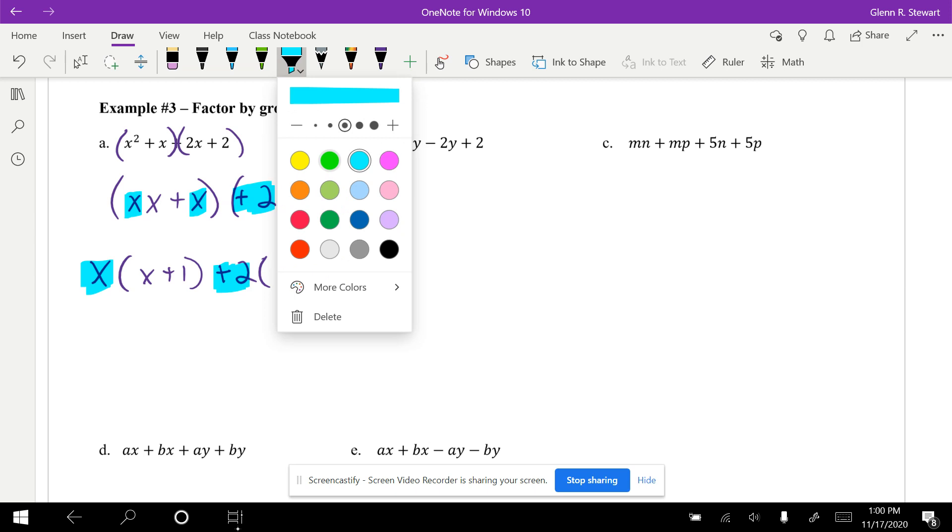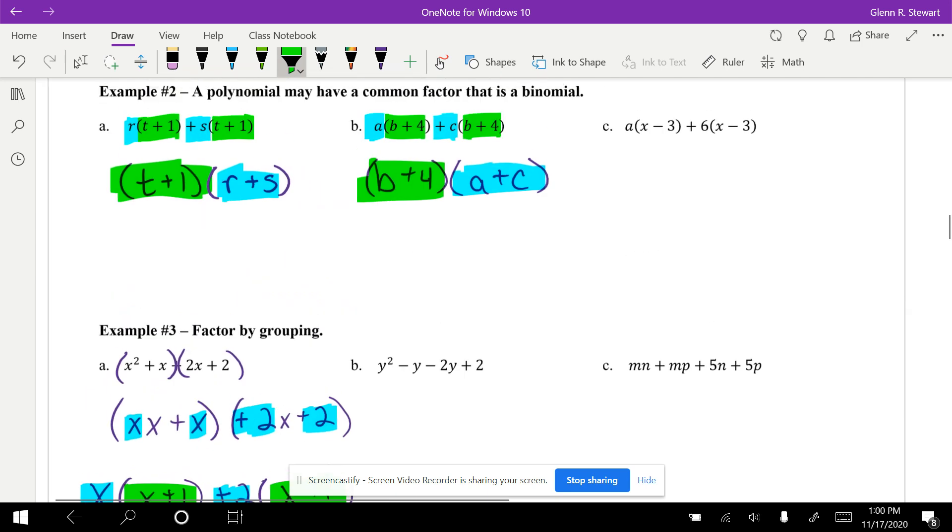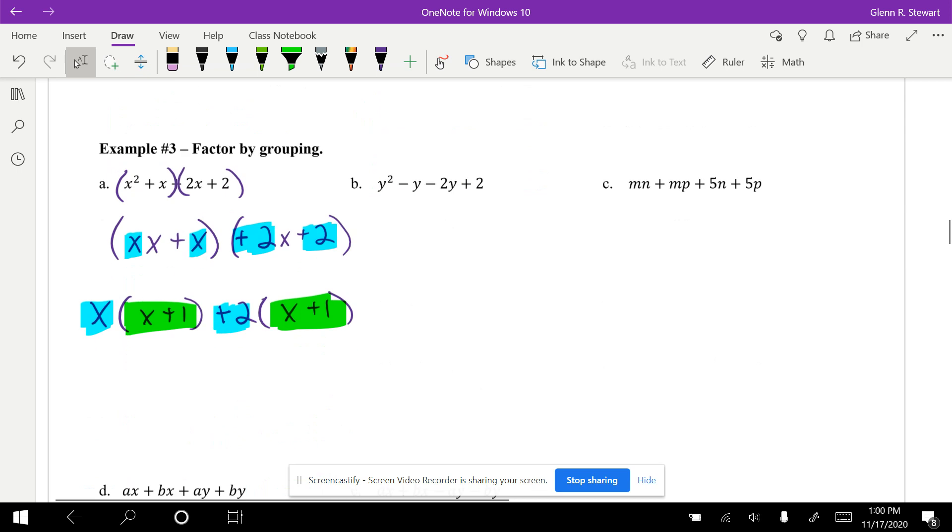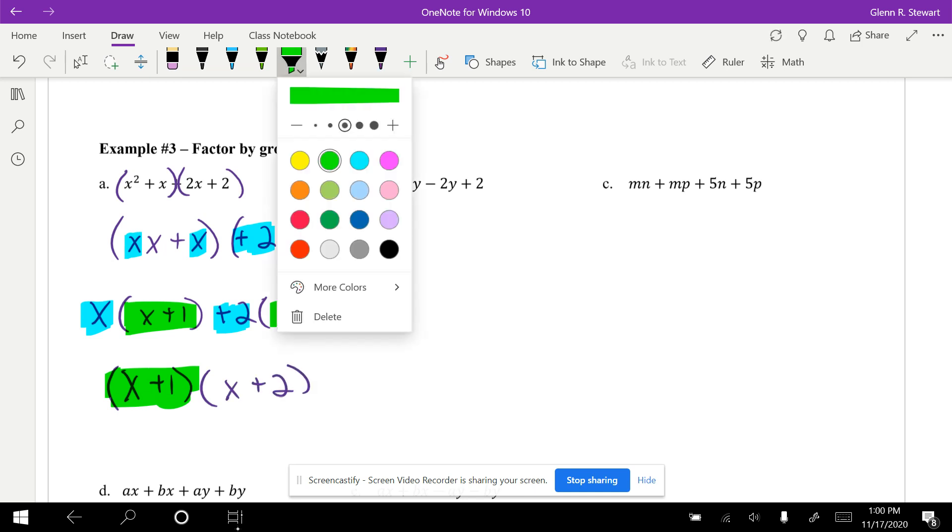Next, I need to look at if they have the same in common. It's the same exact step that I did up here in letter a. So then I can write that out front in green, and then (x + 2) goes for your other part.